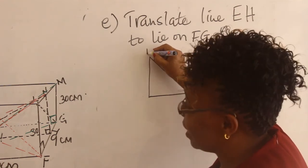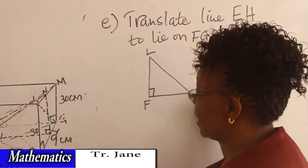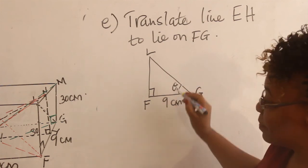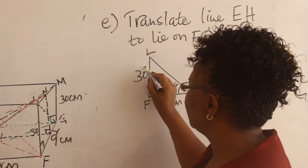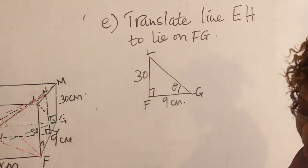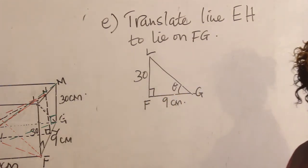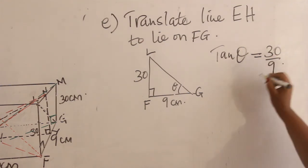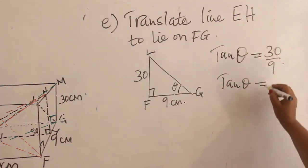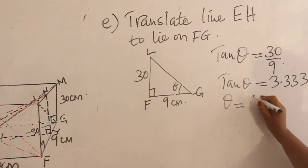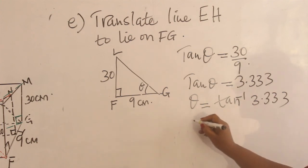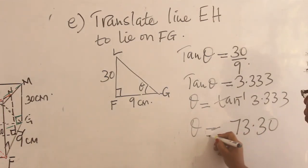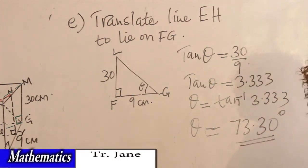We extract the triangle with vertices L, F, and G. The side FG is 9 centimeters and the side FL is 30 centimeters. To find theta, we use tan θ equals 30 over 9, giving 3.333. Therefore theta equals tan⁻¹(3.333). Using a calculator, theta equals 73.30 degrees to four significant figures.